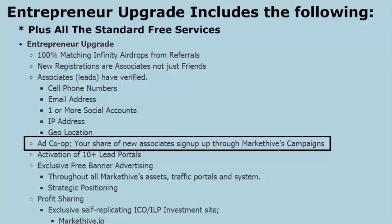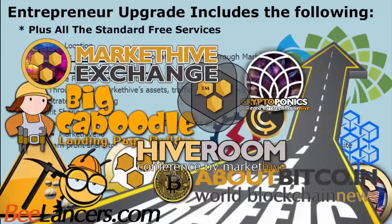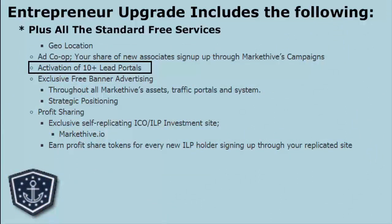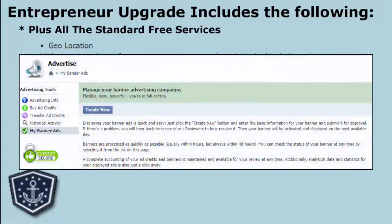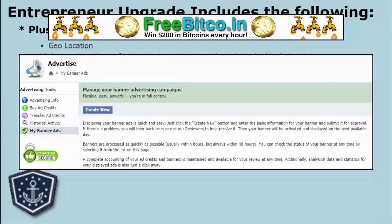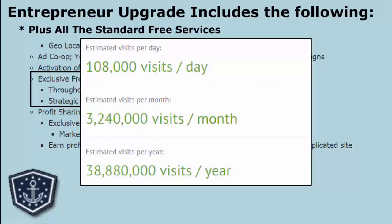Very soon we're going to be launching million dollar campaigns where we'll probably be signing up somewhere between 10,000 to 15,000 people an hour. We will also be activating you as we deliver our lead portals — we will have 10 plus lead portals. These portals give away things like Big Caboodle, a web building platform similar to Wix, and beLancers, a portal similar to Freelancers where people set up shop to sell their services. You will only be able to sell in those portals and produce leads from those portals if you are an entrepreneur upgrade. You also get exclusive access to our free banner advertising program — our banners will be displayed across all of our domains.